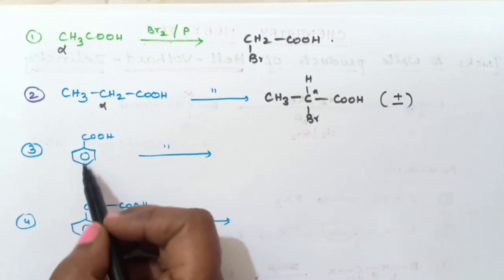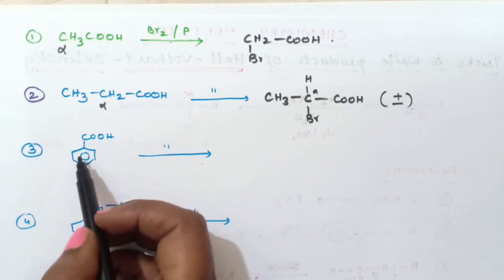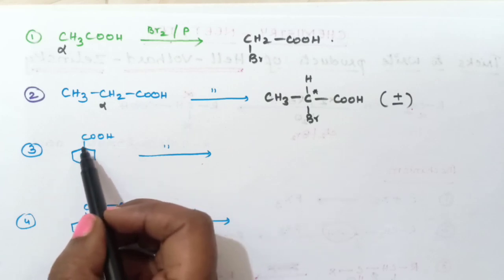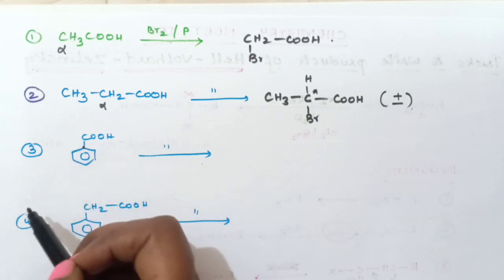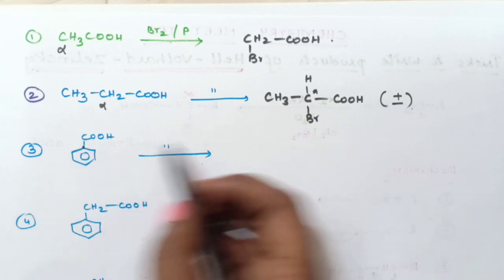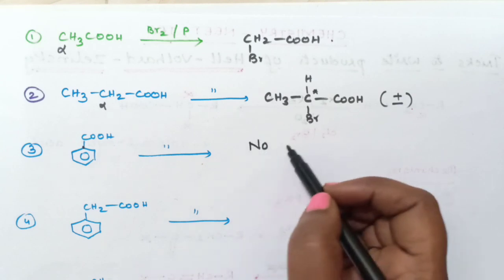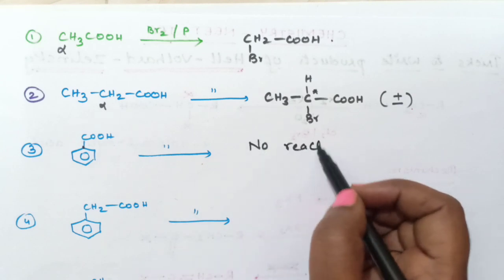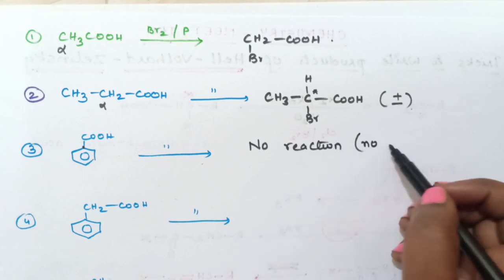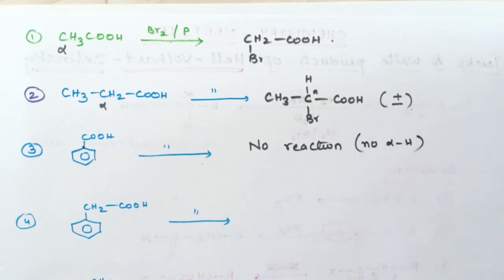For the third example, this is benzoic acid. Check whether an alpha hydrogen atom is present. The carbon adjacent to the carboxylic group (the benzene ring carbon) does not contain any hydrogen atom, so there is no alpha hydrogen atom present. Therefore, no reaction takes place.